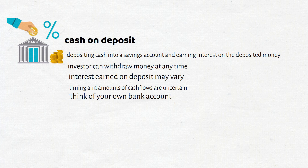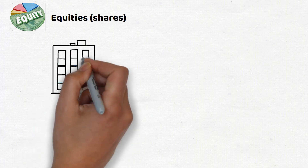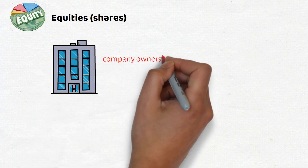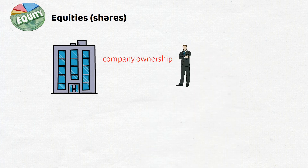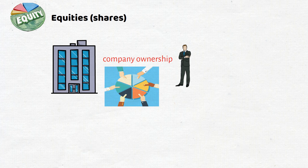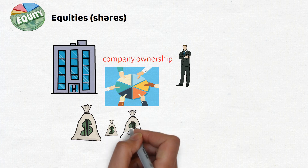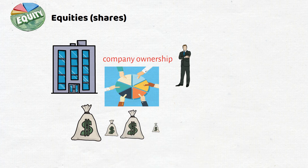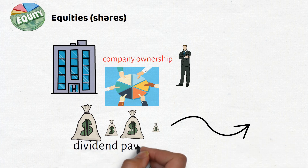Equity shares are securities that represent ownership in a company. Unlike fixed interest securities, equity shares do not provide a fixed interest rate. Instead, shareholders are entitled to a share in the company's profits based on the number of shares they own, and these profits are distributed to shareholders in the form of regular dividend payments. Since dividend payments depend on the company's profit, they are variable and are not known in advance.